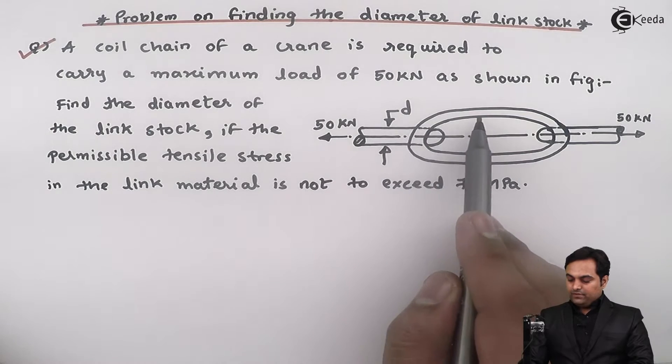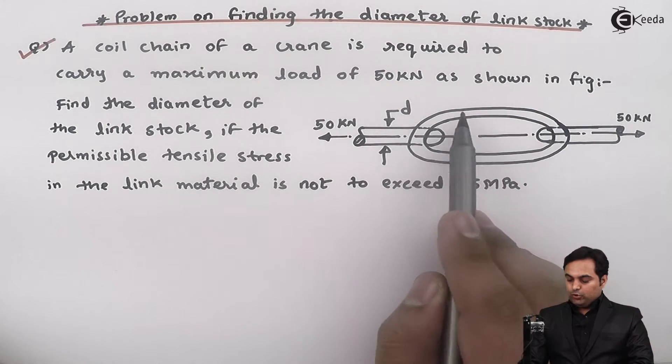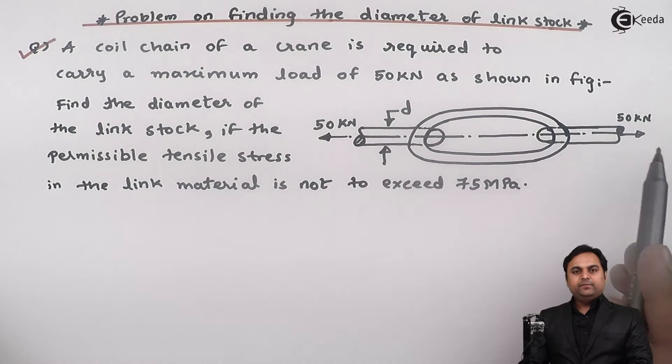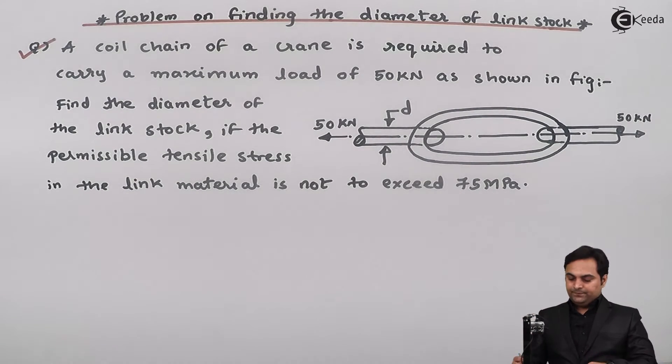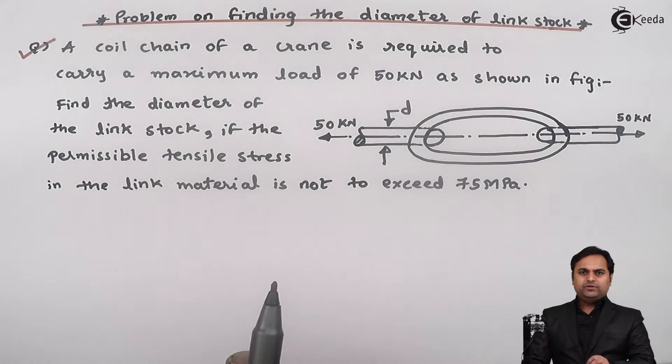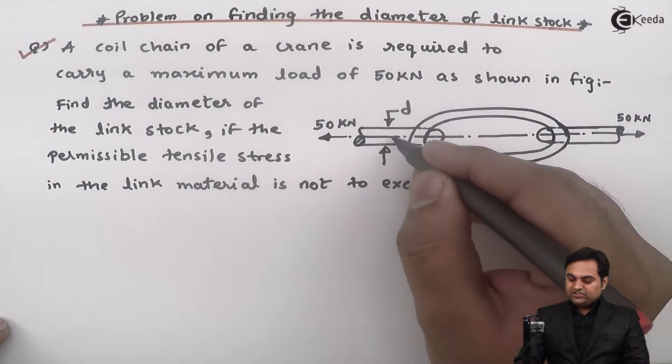The diagram shows a chain with oval sections interconnected with the remaining oval links. We have to find the diameter of this chain cross section.